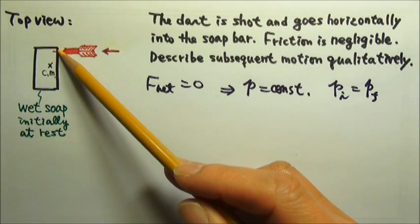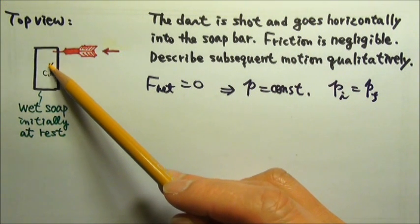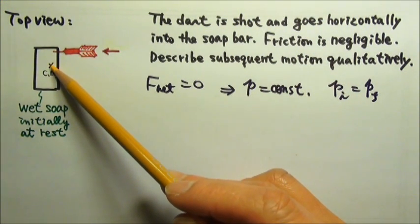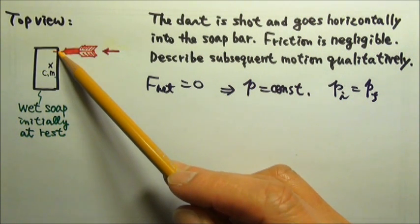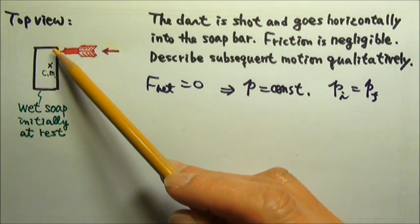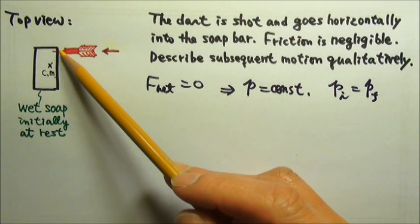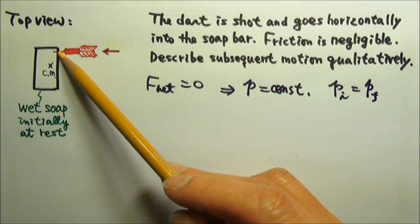So the two forces would create torque relative to the center of mass, and one would be a counterclockwise torque. The other one would be a clockwise torque, so those two torques, the equal and opposite action torque and reaction torque, would cancel.